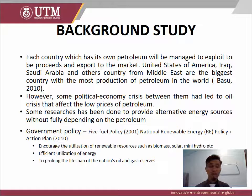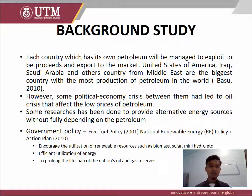In 2001 and 2010, the Malaysian government came out with a policy to support renewable energy. The policy encouraged utilization of renewable resources such as biomass, solar, and mini hydro. They also focused on energy efficiency and prolonging the lifespan of national oil and gas.